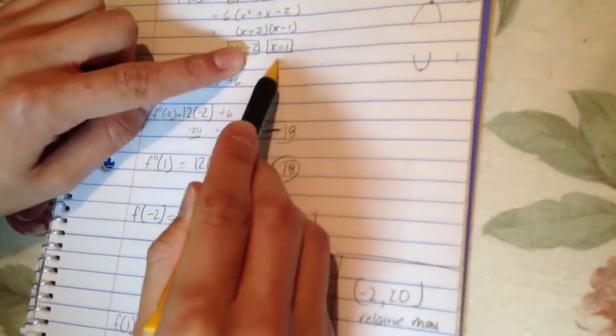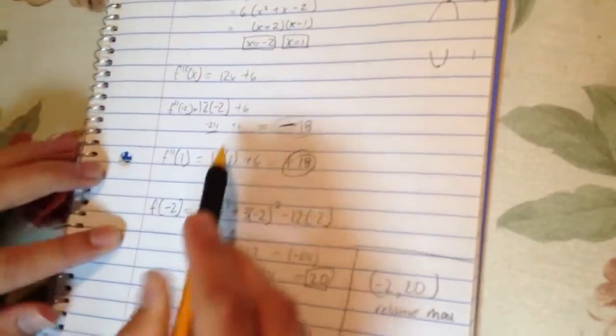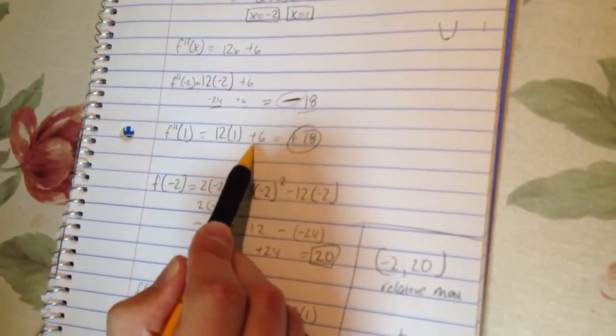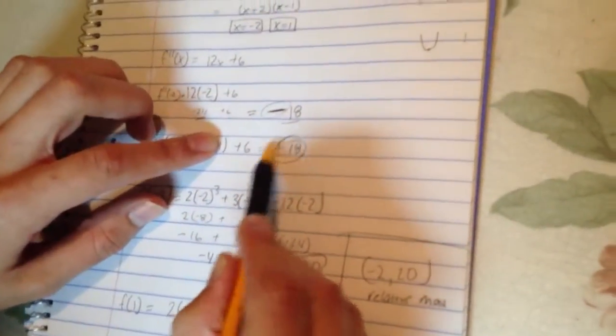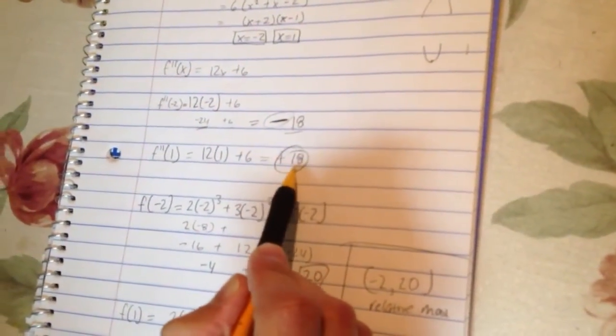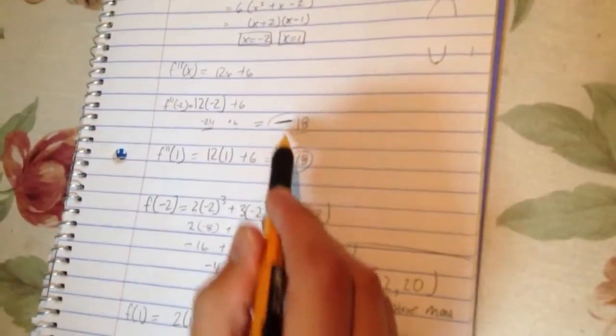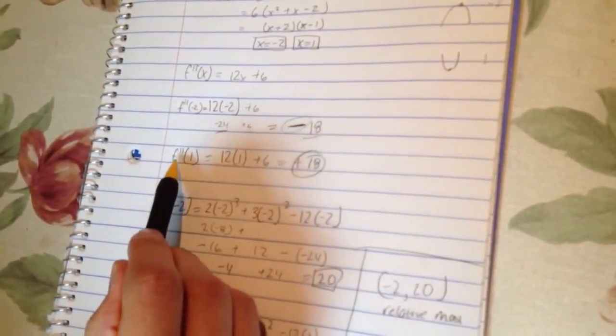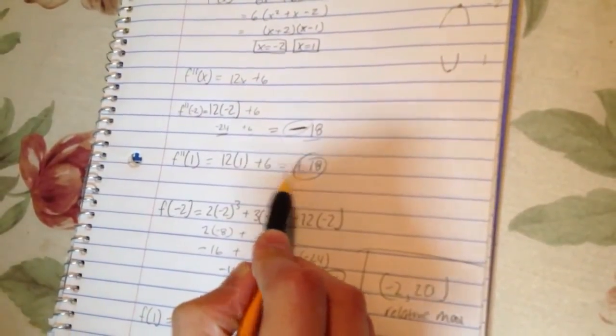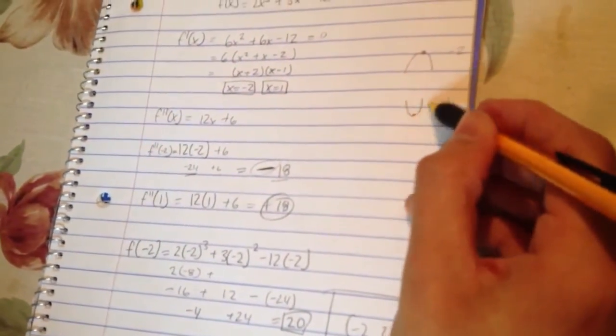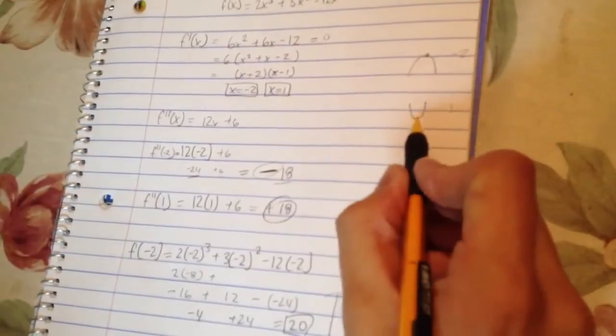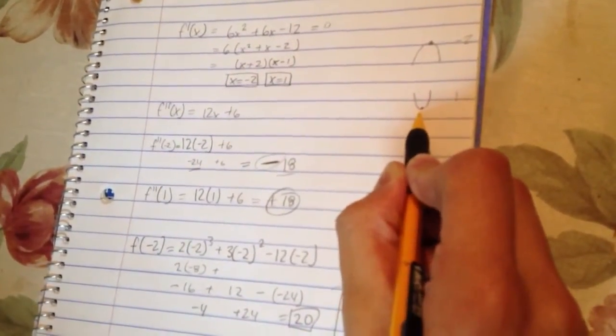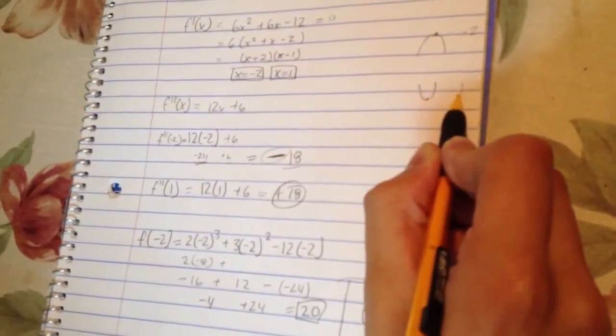Do the same thing for your second critical point, x is equal to 1, and you'll be left with 12 times 1 plus 6, and this is a positive sign, and that's all that really matters. This 18 and 18 here don't really matter all that much. What matters here are the signs. So meaning that if you take the second derivative here and you're left with a positive on the second one, that means that it's concaving up if it's positive. So if it's concaving up, what that means is you have a relative minimum at that value of 1.